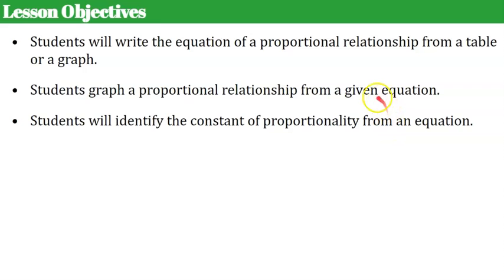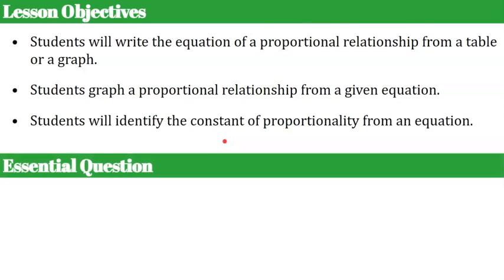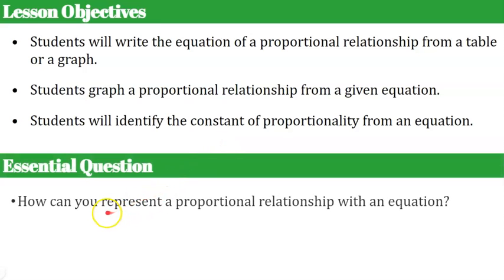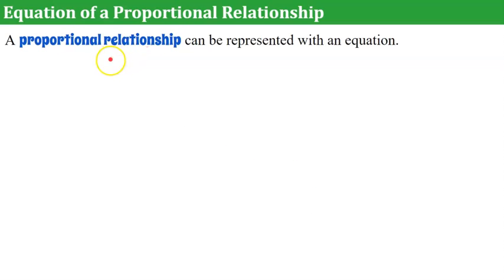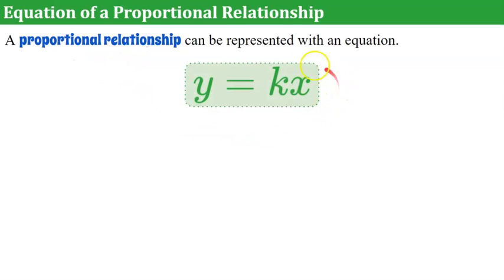If you have not watched my previous video in this playlist, I would suggest you go there to learn about proportional relationships and how they look on a graph. Here's the question for today's lesson: How can you represent a proportional relationship with an equation? An equation of a proportional relationship looks like this: Y equals K times X.